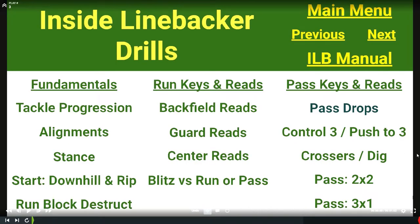In this quick snap we're going to talk about pass keys and reads for inside linebackers within a 3-4 two-high defensive structure — how they're relating to the number three receiver, controlling the final number three receiver, using the number three receiver to tell them their pass responsibility, how they need to leverage crossers or dig routes, and looking at some actual pattern matches by inside linebackers against two-by-two sets and three-by-one sets.